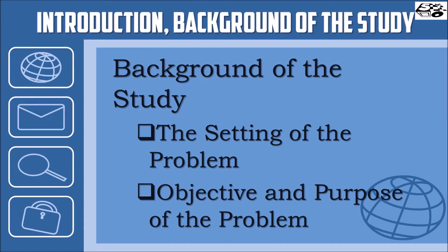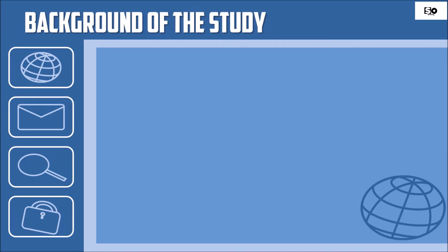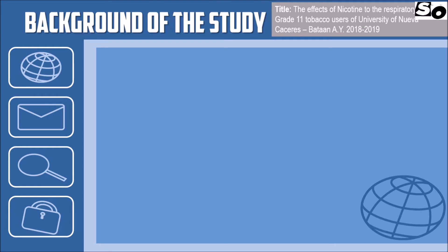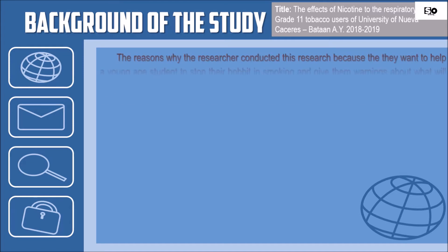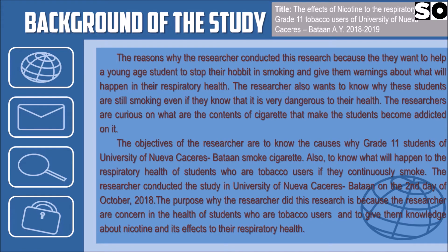An example of the background of the study — the title is The Effect of Nicotine to the Respiratory Health of Grade 11 Tobacco Users of University of Nuevo Caceres, Bataan, Academic Year 2018-2019. In the background of the study example, we can see that it gives us the setting of the problem as well as the objective and purpose of the problem, and it also answers the 4W and 1H.